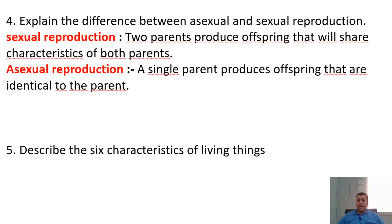Question four: explain the difference between asexual and sexual reproduction. Sexual reproduction involves two parents who produce offspring that share characteristics of both parents. Asexual reproduction involves a single parent who produces offspring that are identical to the parent — meaning a copy of the parent.